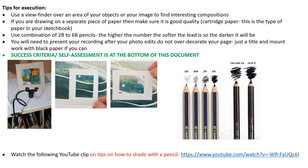If you're drawing on a separate piece of paper, make sure it's good quality — cartridge paper, which is the type of paper you have in your sketchbook. Use a combination of 2B to 6B pencils, or you might want to use your graphite pencil from your art pack. The higher the number, the softer the graphite, and therefore the darker it will be.